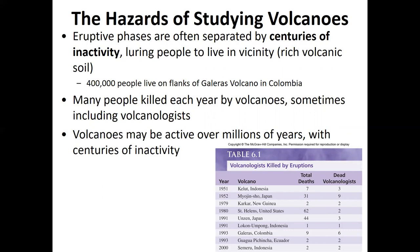The eruptive phases of volcanoes are often separated by centuries of inactivity, which lures people into the vicinity — especially since volcanic soil breaks down into very fertile soil for farming. There are currently 400,000 people living on the flanks of the Galeras volcano in Colombia. Many people are killed each year by volcanoes, sometimes including volcanologists, who represent a substantial percentage of volcano-related deaths because they find themselves in high-risk areas.